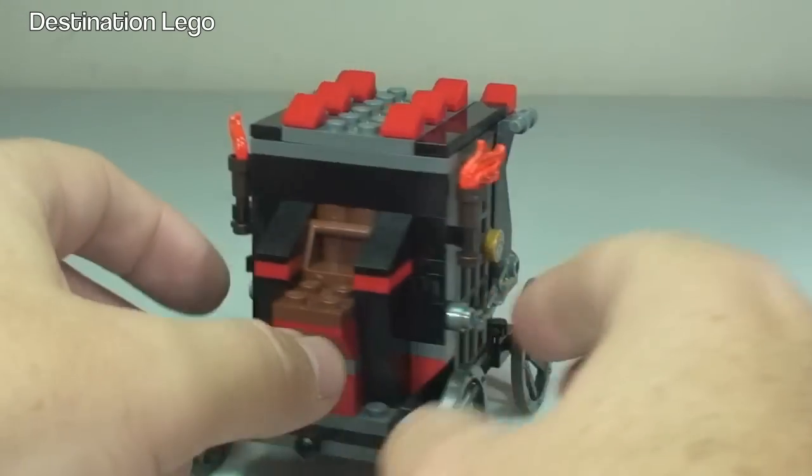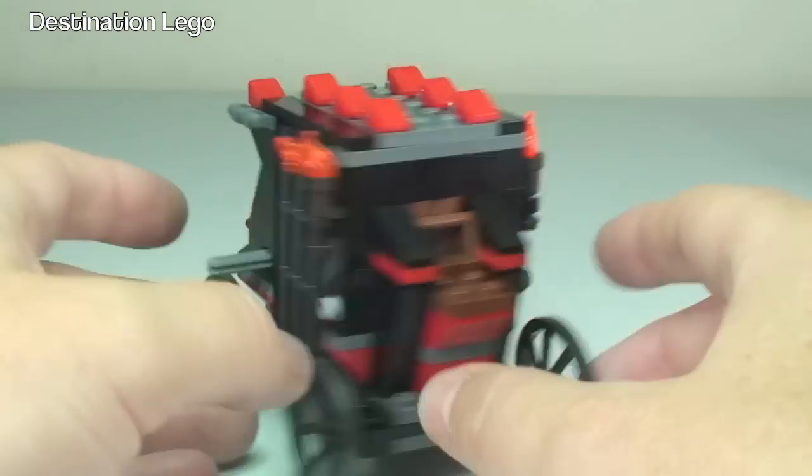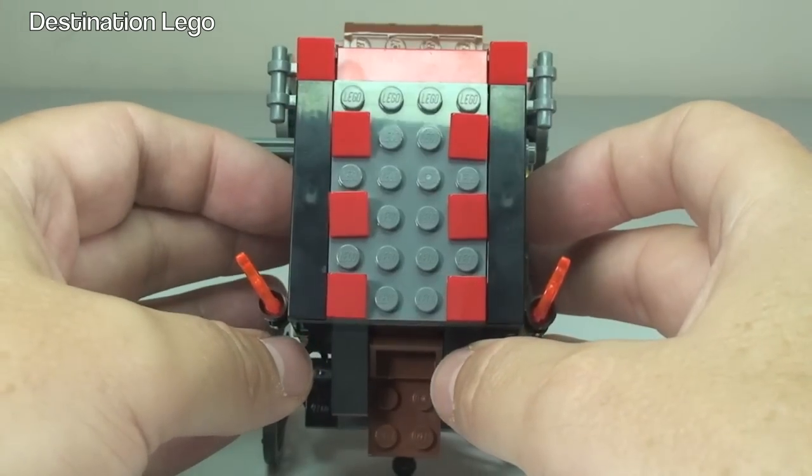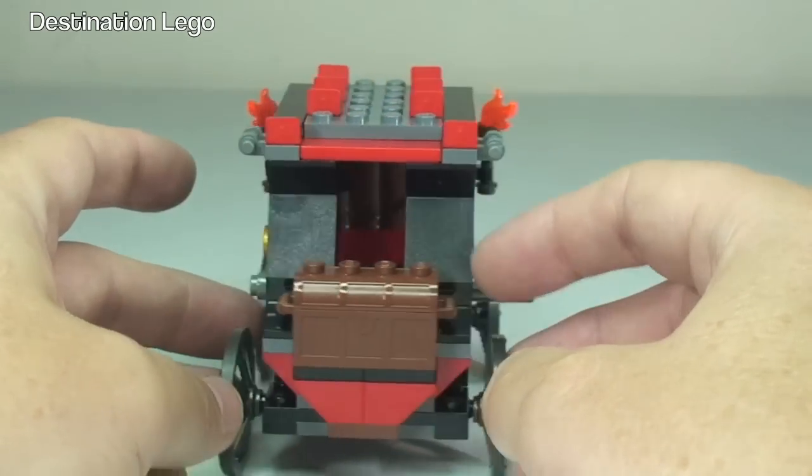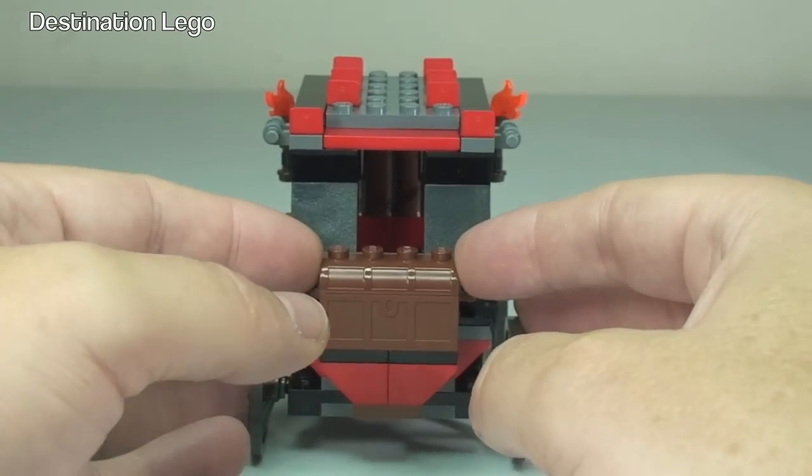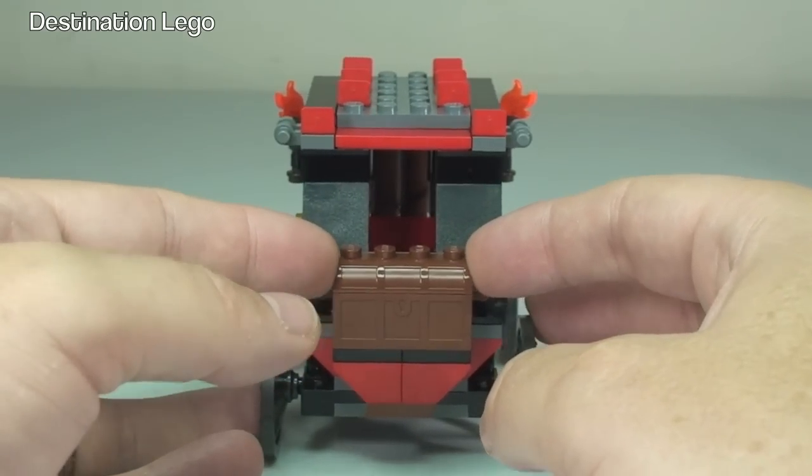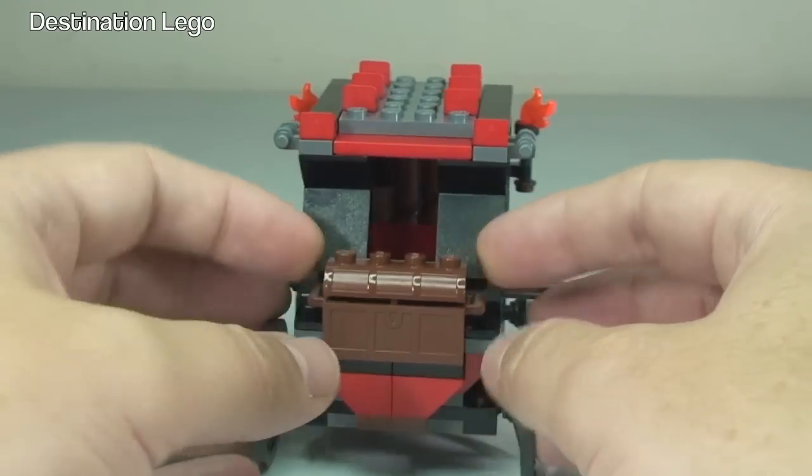Two torches, so one either side flaming away, and the other one there flaming away that side. Again, look at the design on the top. Moving around to the rear, we have the chest, the treasure chest on the rear. This does obviously just open up.